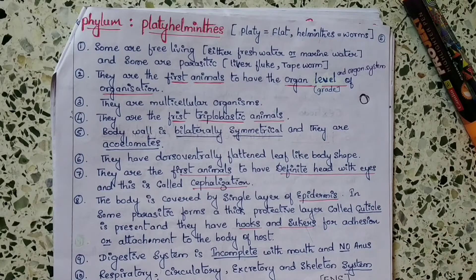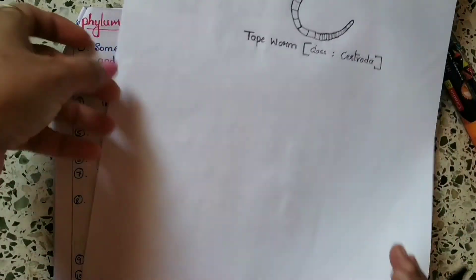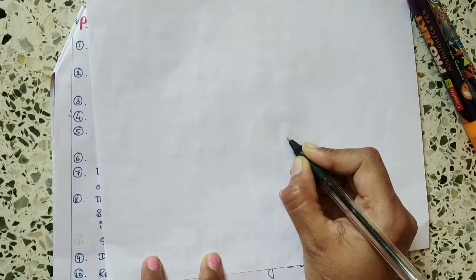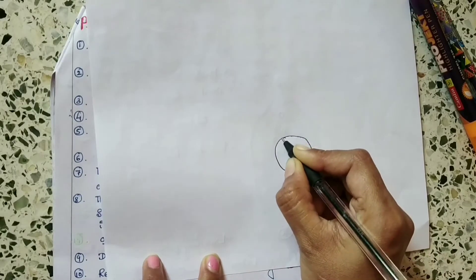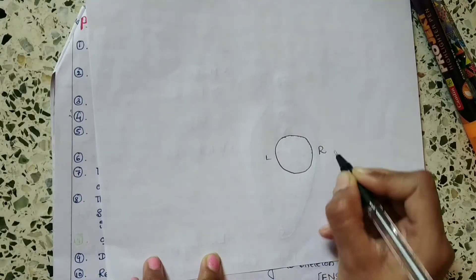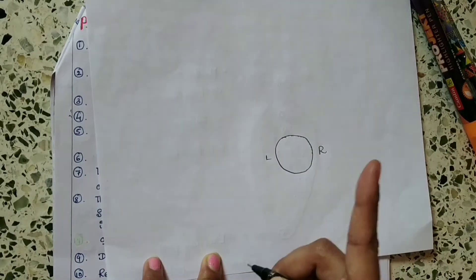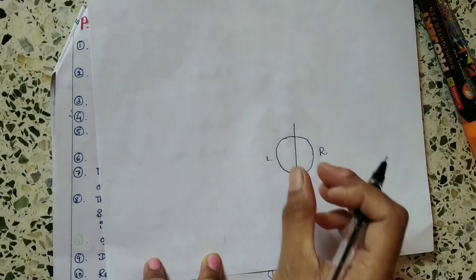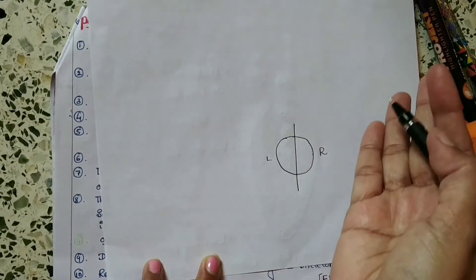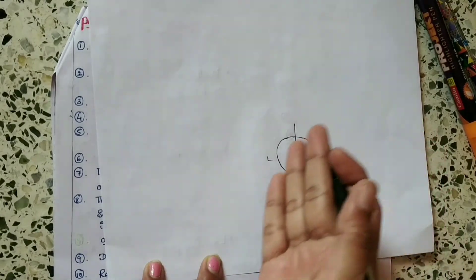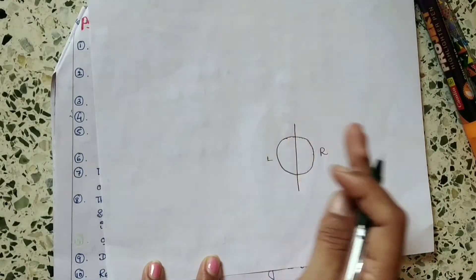Bilaterally symmetrical means, as I gave the definition: if it is a body like this, this body can be divided into identical left and right halves in only one plane. You can get two identical halves when we cut in only a definite angle. Otherwise we don't get identical halves. That actually defines bilaterally symmetrical.